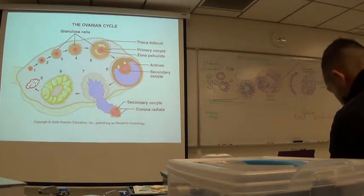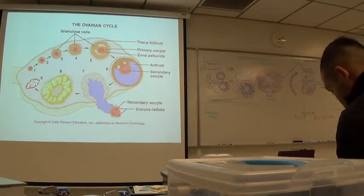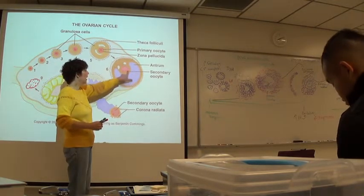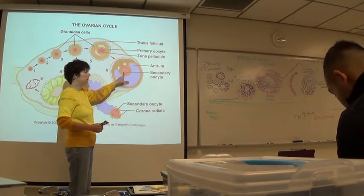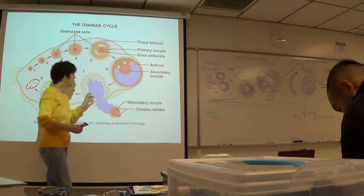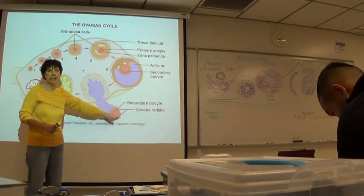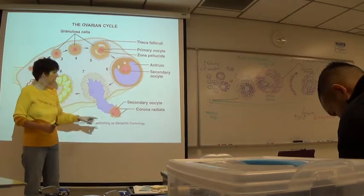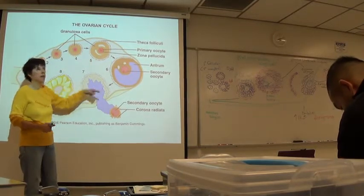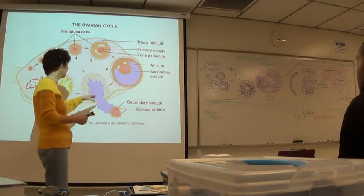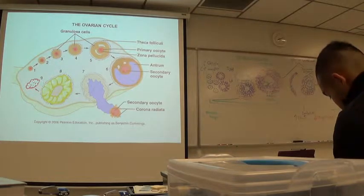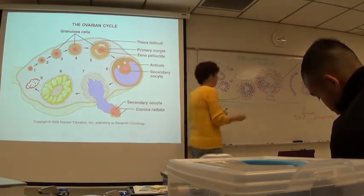Back to this ovary diagram. Here is the mature antral follicle. The secondary oocyte has already formed with the first polar body, so this is just prior to actual ovulation. We have a rupture — the release of the secondary oocyte with the first polar body and the follicular cells around it. This structure that remains behind, with a little bit of bleeding, is known as the corpus hemorrhagicum.